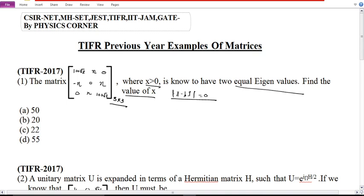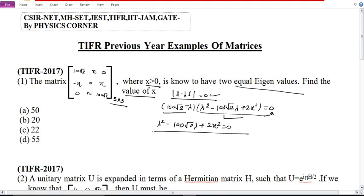I am using a formula. We will find the characteristic equation. In this formula we will put the values. It will be 100 root 2 minus lambda into lambda square minus 100 root 2 into lambda plus 2x square equals 0. Now this equals 0 and this equals 0. Therefore, lambda square minus 100 root 2 lambda plus 2x square equals 0.